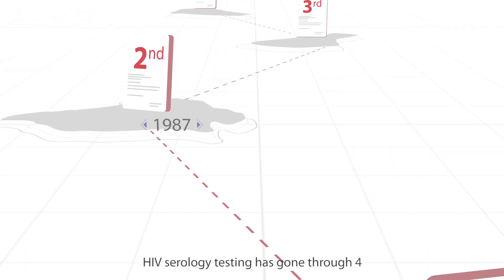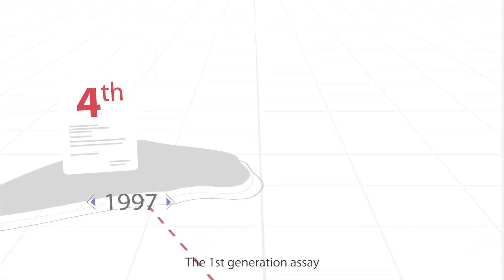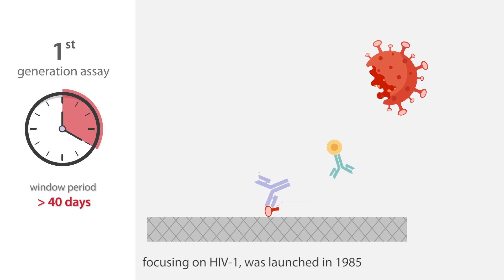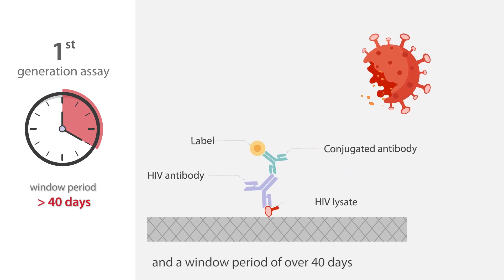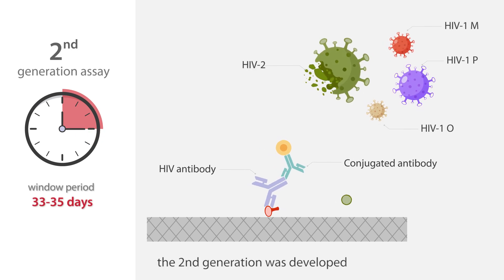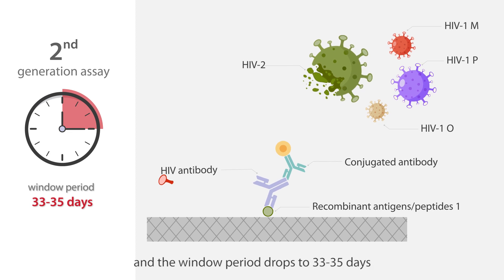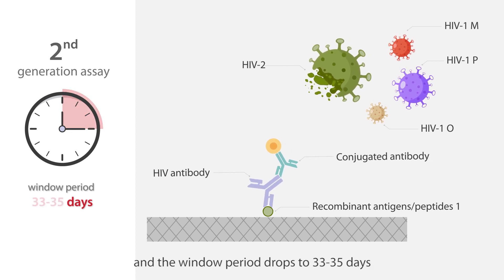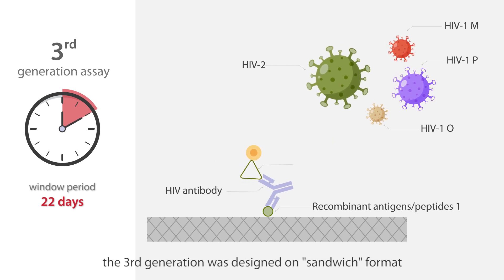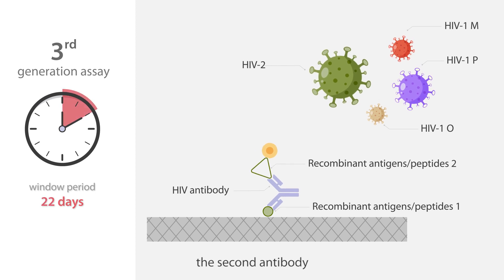HIV serology testing has gone through four generations of evolution over more than 30 years. The first-generation assay, focusing on HIV-1, was launched in 1985 with low specificity and a window period of over 40 days. In 1987, the second generation was developed with higher sensitivity and specificity, and the window period dropped to 33 to 35 days. In 1994, the third generation was designed on a sandwich format, employing another viral antigen to replace the second antibody.